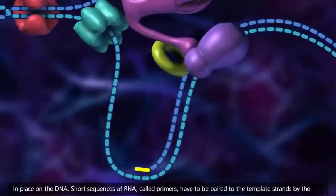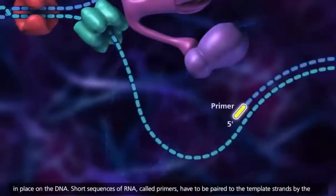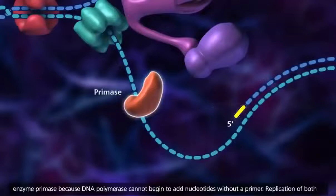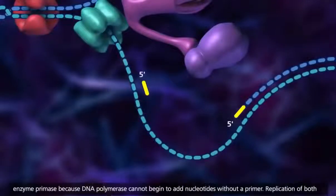Short sequences of RNA, called primers, have to be paired to the template strands by the enzyme primase, because DNA polymerase cannot begin to add nucleotides without a primer.